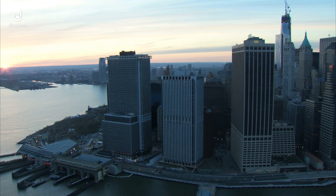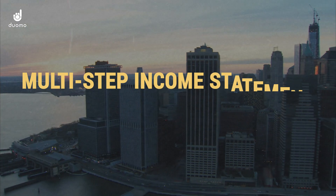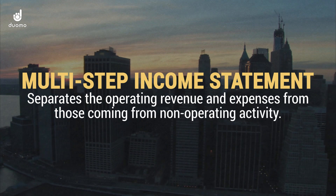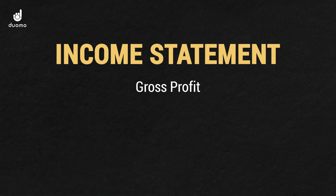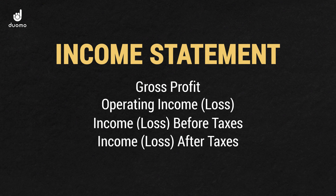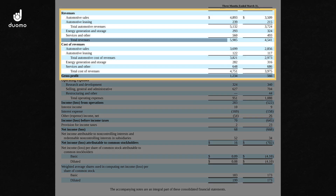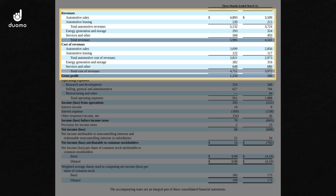Companies will structure the income statement differently, but listed companies like Tesla will typically follow what we refer to as a multi-step income statement, which separates the operating revenue and expenses from those coming from non-operating activity. So we're looking at gross profit, operating income or loss, the income or loss before taxes, and then the income or loss after taxes. To get to the gross profit, we'd typically look at total revenue minus the cost of that revenue — so traditionally here you'll have sales revenue, and in the costs you may have heard of the term cost of goods sold. This gives us the gross profit.